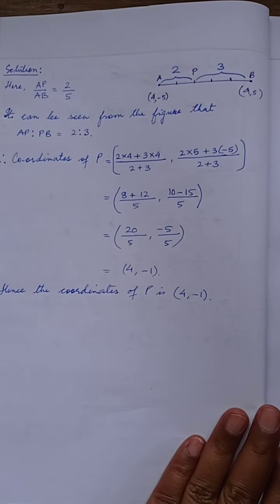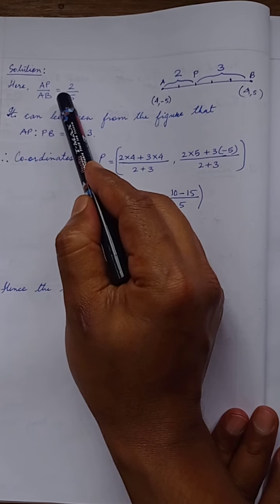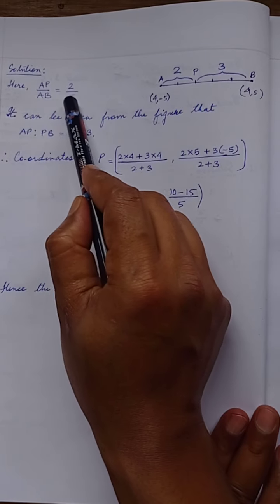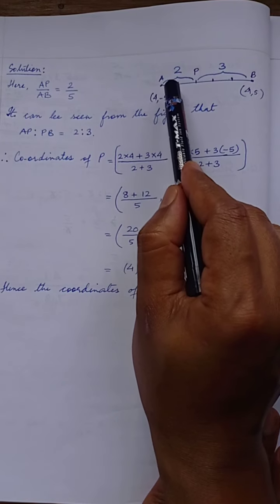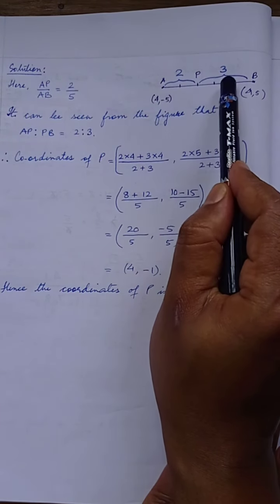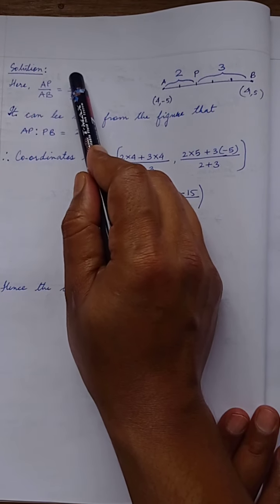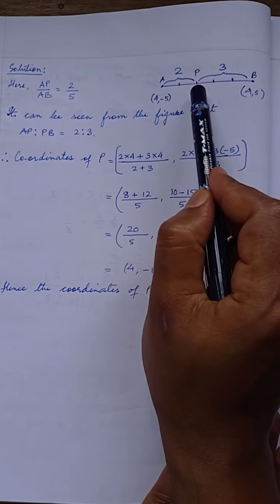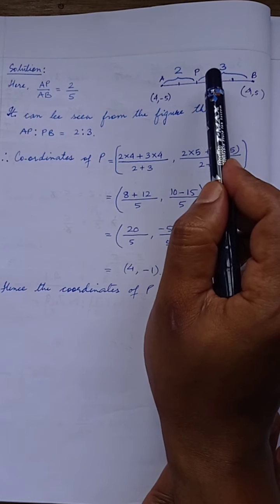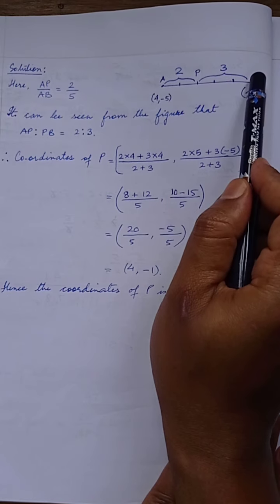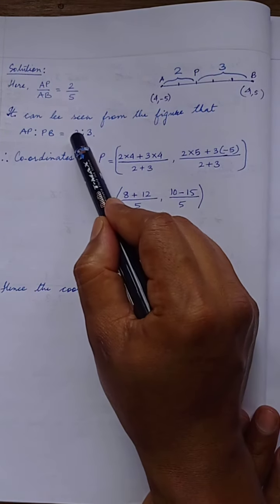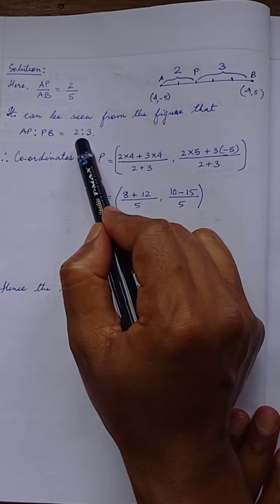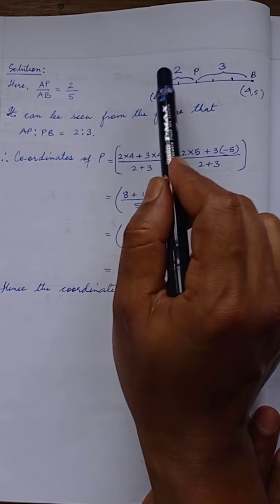We are given AP/AB = 2/5, which means AB is divided into 5 equal parts. AP takes 2 of those parts, so P is located after 2 parts, leaving 3 parts for PB. Therefore the ratio AP:PB = 2:3. The ratio was not directly given in the question, so we derived it from this figure.